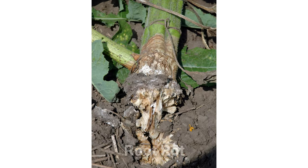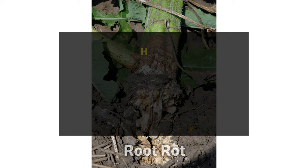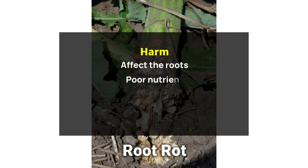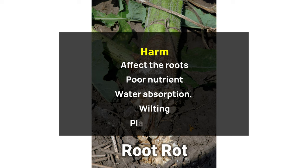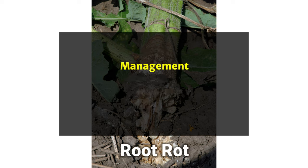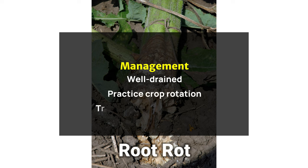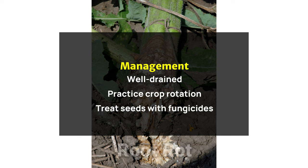Root Rot harm: root rot pathogens can affect the roots, leading to poor nutrient and water absorption, wilting, and plant death. Management: to control root rot, ensure soil is well-drained, practice crop rotation, and treat seeds with fungicides before planting.